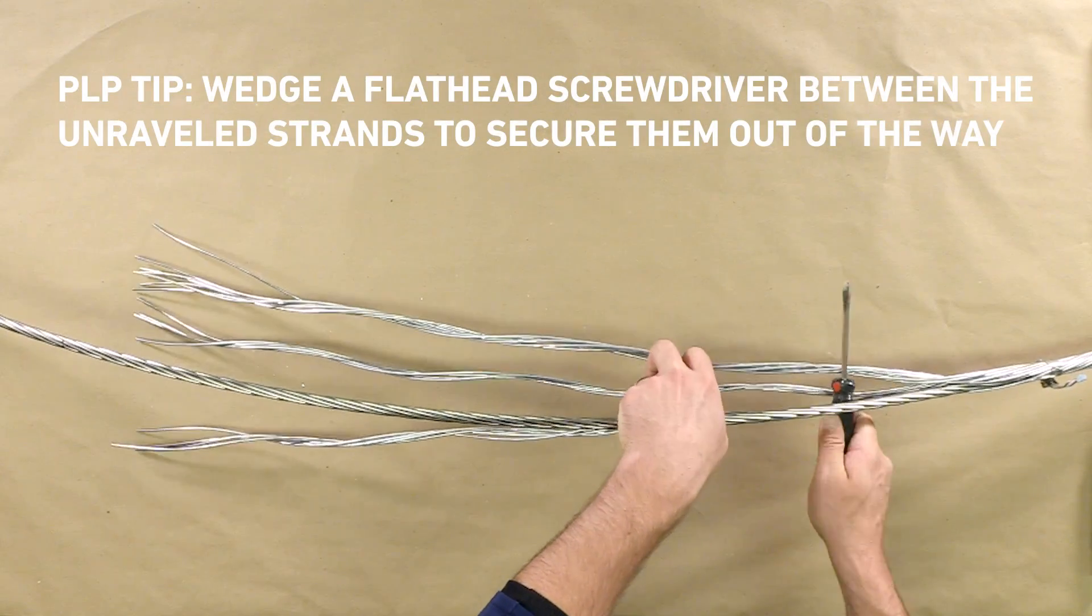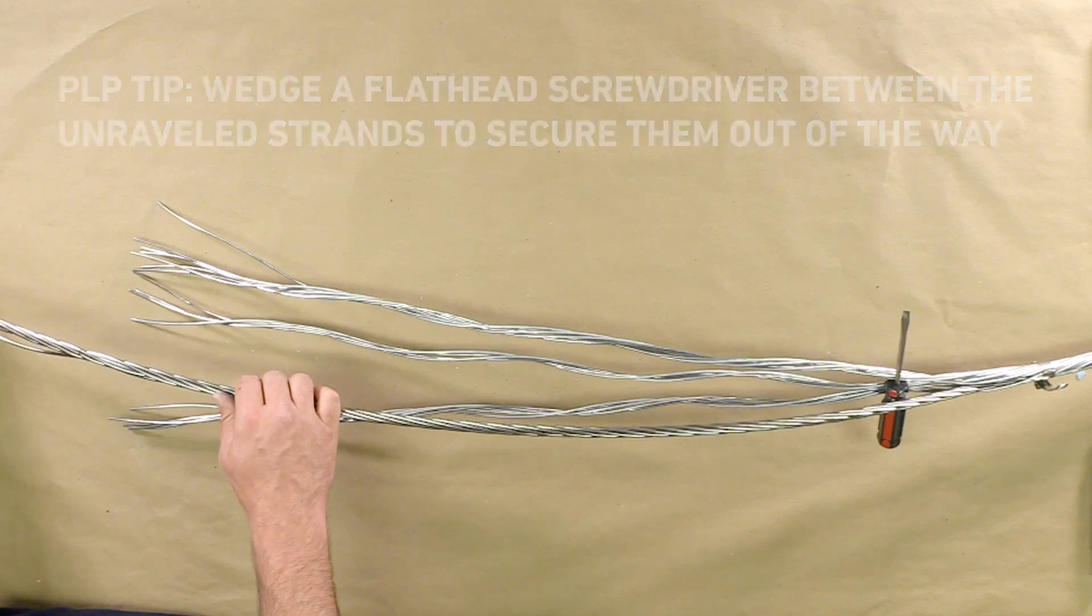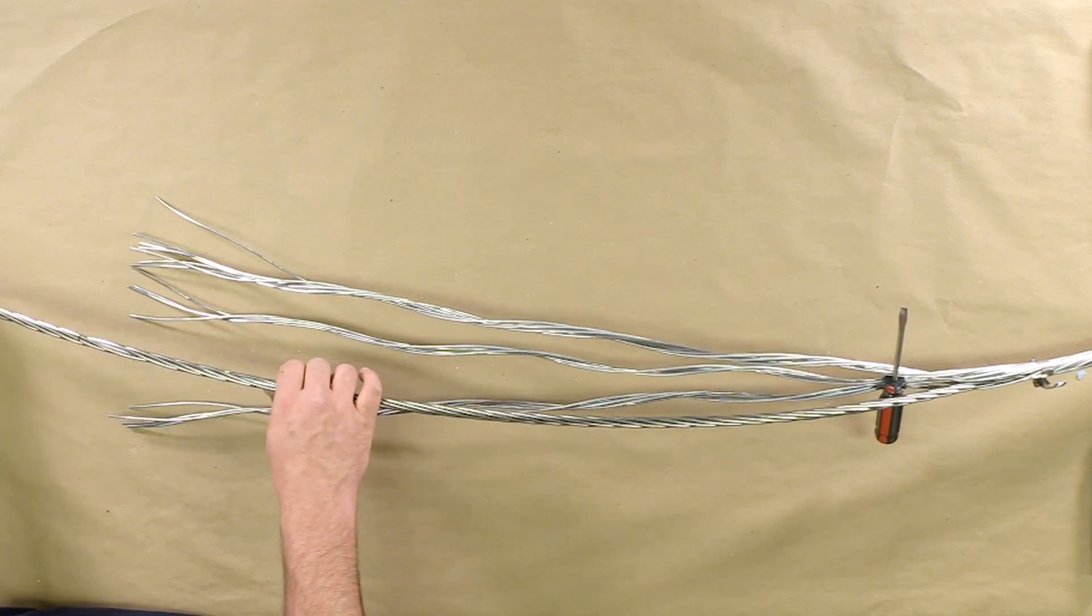Wedge a flathead screwdriver between the unraveled strands to secure them out of the way. Unravel the stainless steel buffer tube back to the hose clamp location.